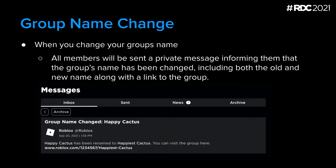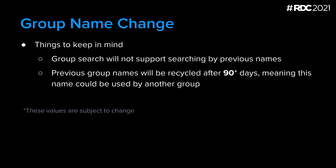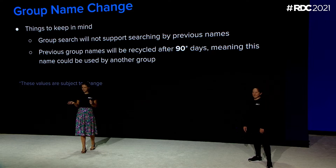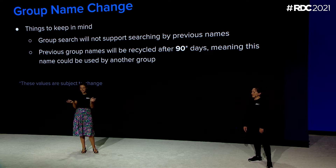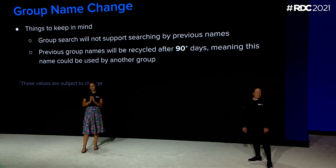So how are we notifying group members? If you're in a group that has changed its name, you will receive a direct message with information about the change and a link to the group details page. Two major things to keep in mind: group search will not support searching by previous names, so it's not guaranteed to show up in search results for the previous name afterwards. And previous group names will be recycled after the cooldown period — different from how usernames work. This means a group can be created with or change its name to your group's old name after 90 days have passed. We are targeting this feature by the end of the year, but that date is also subject to change.